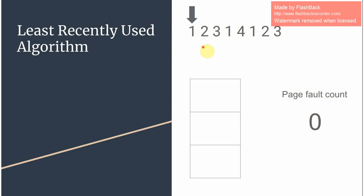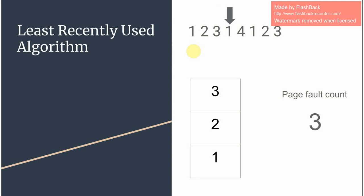Now let's look at an example to understand this better. Here in this example we have taken a frame size of 3. When 1 comes in it's not initially recorded in the frame, so we record it and increase the page count, and so do 2 and 3. When we reach 1 again it's already recorded so we do not increase the page count and we move on to the next one.